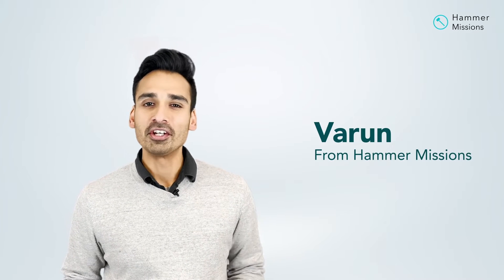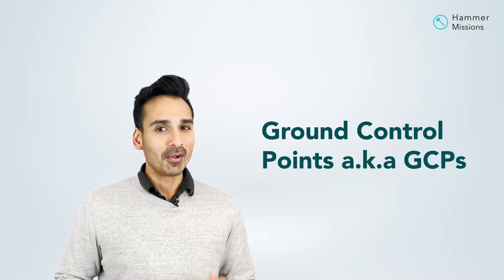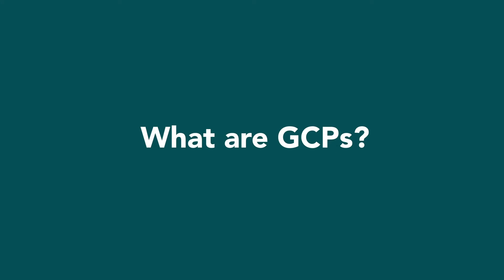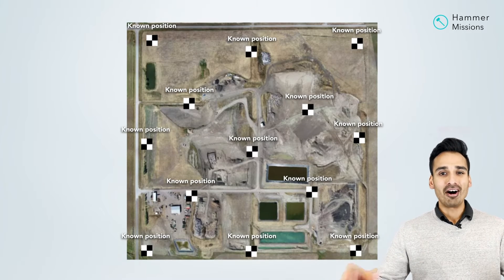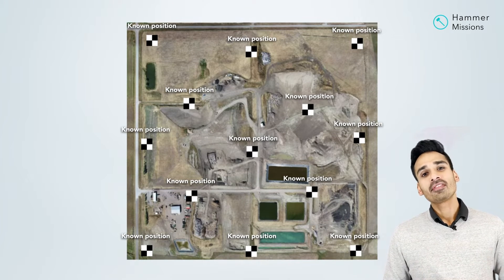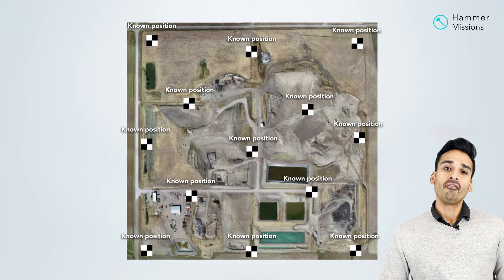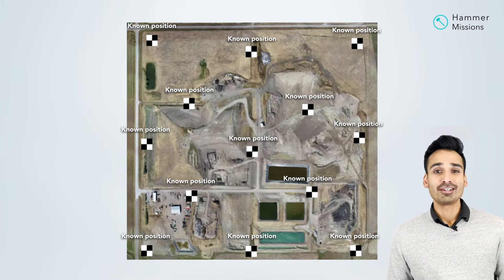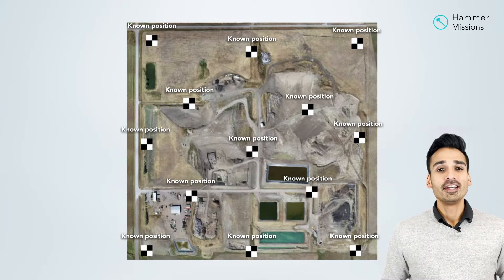Hey everyone, I'm Varun from AMO Missions. In this video I want to break down ground control points, also known as GCPs. So, what are GCPs? GCPs are essentially a method used to create highly accurate drone surveys, whether it's maps or models. In this method, you put these checkerboard-style markers — or any type of markers — on the ground that you're trying to survey, and you record their GPS positions using a base station or GPS equipment.